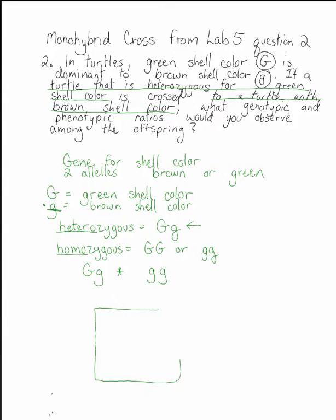Now we fill out our Punnett square. We have big G little g coming from this parent and little g little g coming from that parent, and then we simply fill out the rest of the Punnett square.